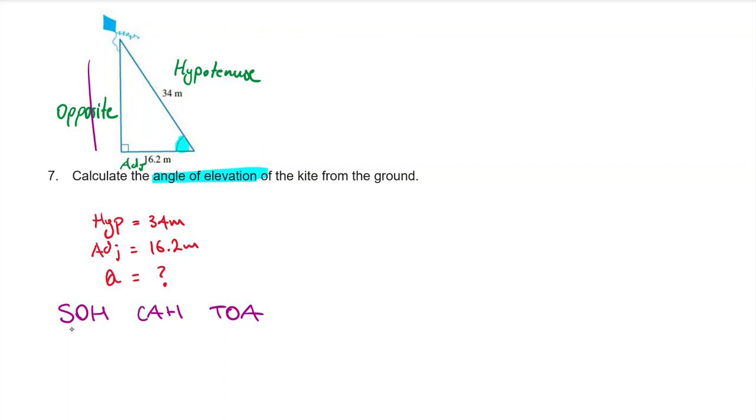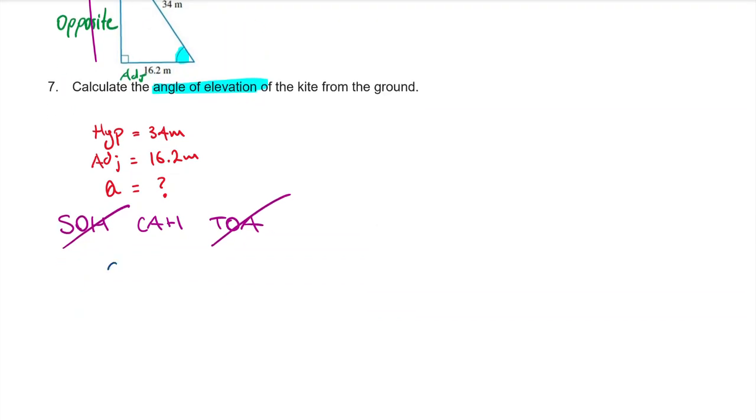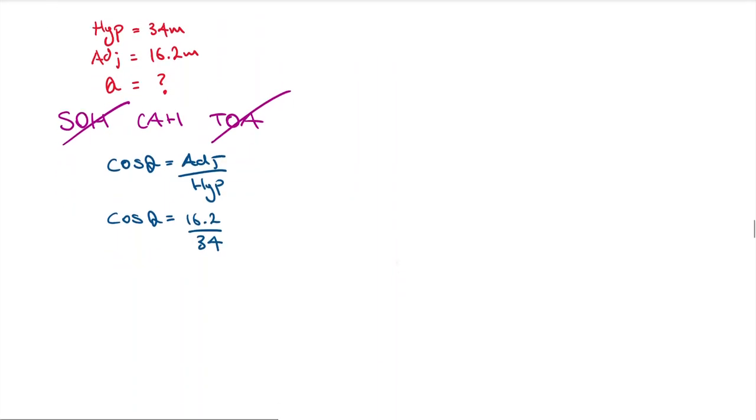Sine theta is opposite over hypotenuse, cannot use that one. Tan theta is opposite over adjacent, can't use that. So the correct ratio to use is cosine theta, which is adjacent divided by the hypotenuse. So I'll plug in my values: 16.2 divided by 34.